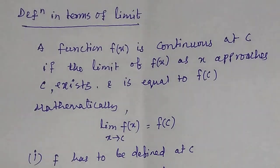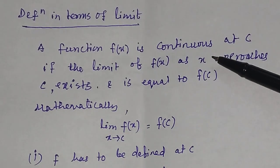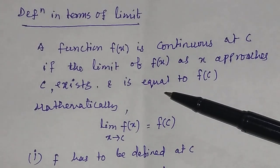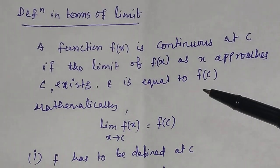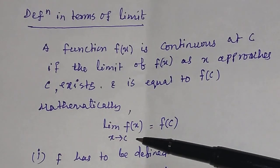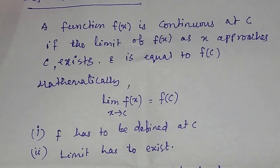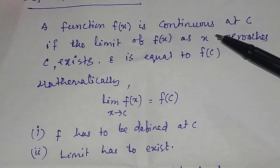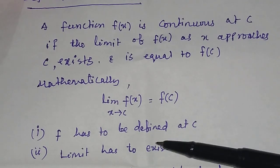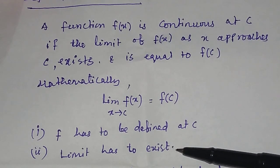Definition of a continuous function in terms of limits. A function f(x) is continuous at c if the limit of f(x) as x approaches c exists and is equal to f(c). Mathematically, we write: the limit of f(x) as x approaches c is equal to f(c). For a continuous function f(x), two conditions must be satisfied: the function has to be defined at c, and the limit has to exist.